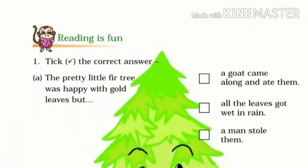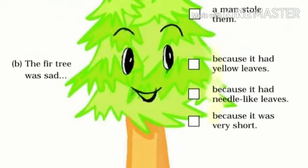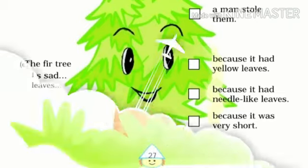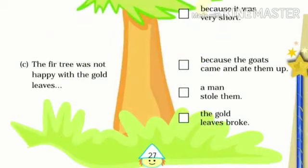Now, question and answer. Moving on to page number 27, Reading is Fun. The title is: tick the correct answer. These things you have to do in your textbook. A: The pretty little fir tree was happy with gold leaves, but a man stole them. B: The fir tree said that because it had needle-like leaves. C: The fir tree was not happy with the gold leaves — man stole them.